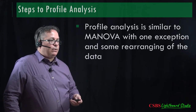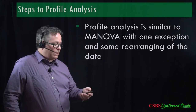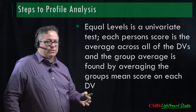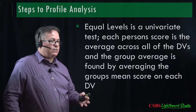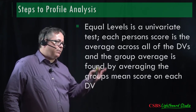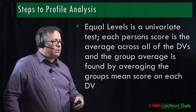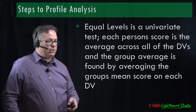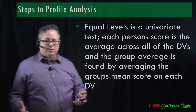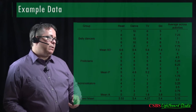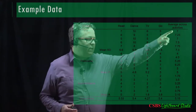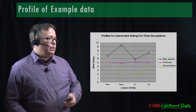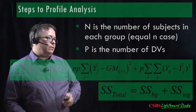The first step before getting to segmented data is to do the univariate part. Equal levels is a univariate test — each person's score is the average across all the DVs, and the group average is found by averaging the group mean score on each DV. We take the averages column and treat this as a one-way ANOVA to get our equal levels difference.